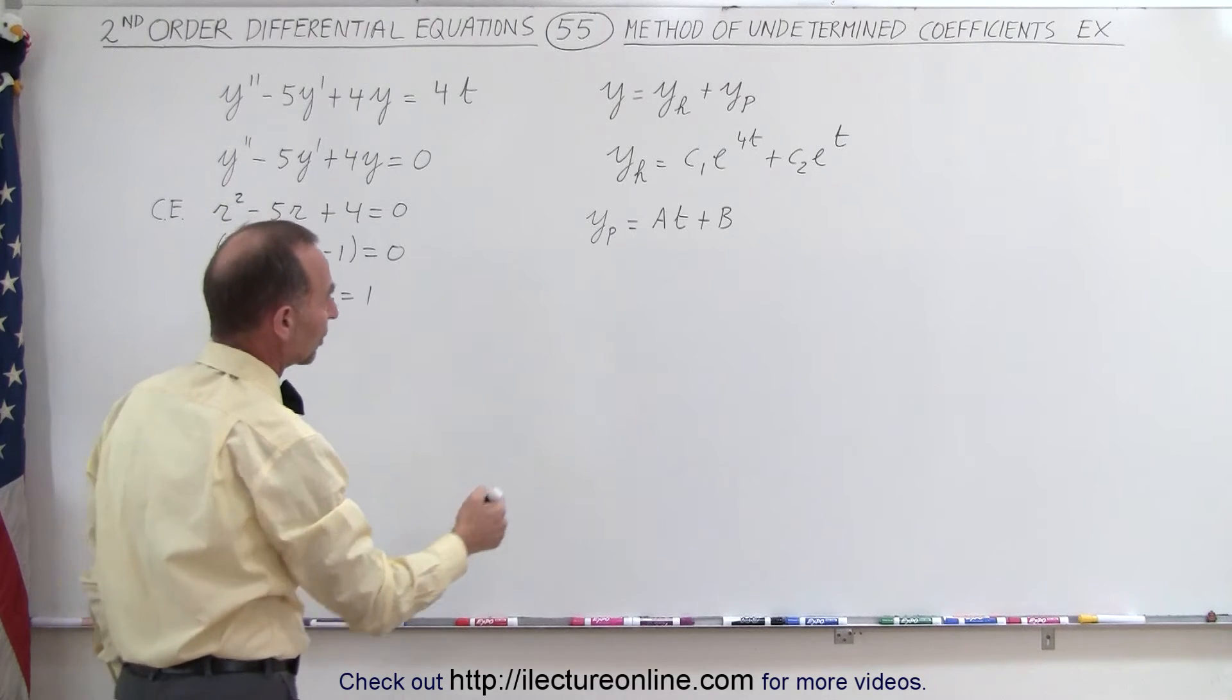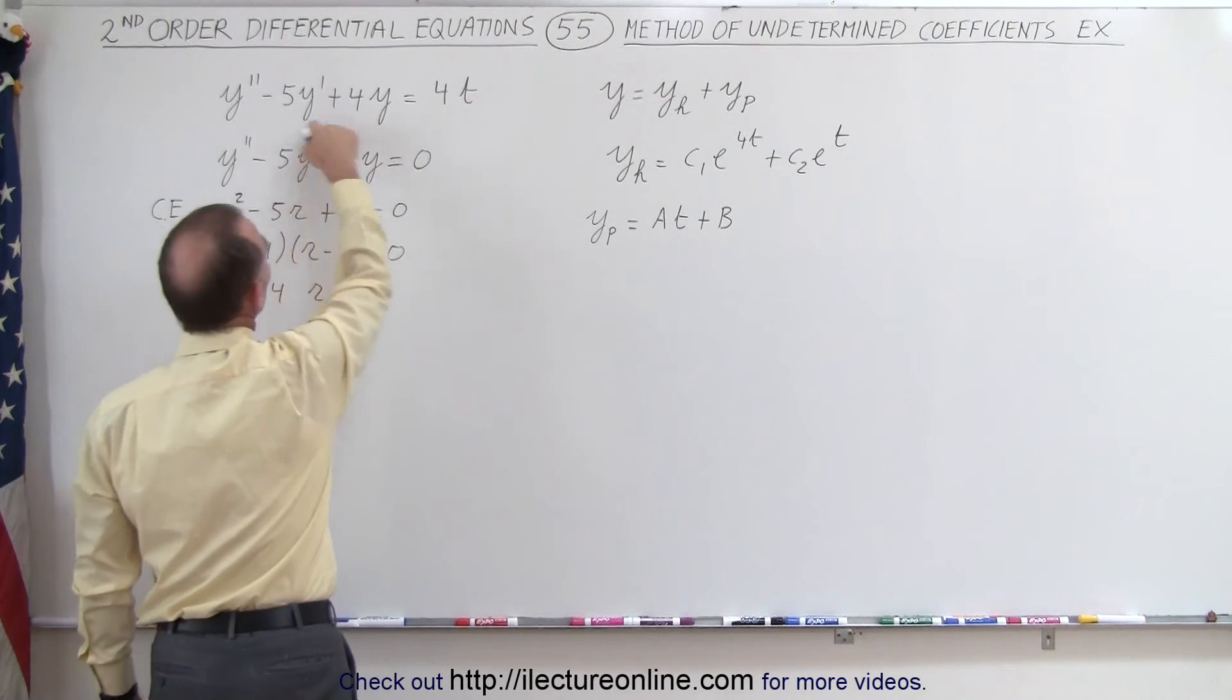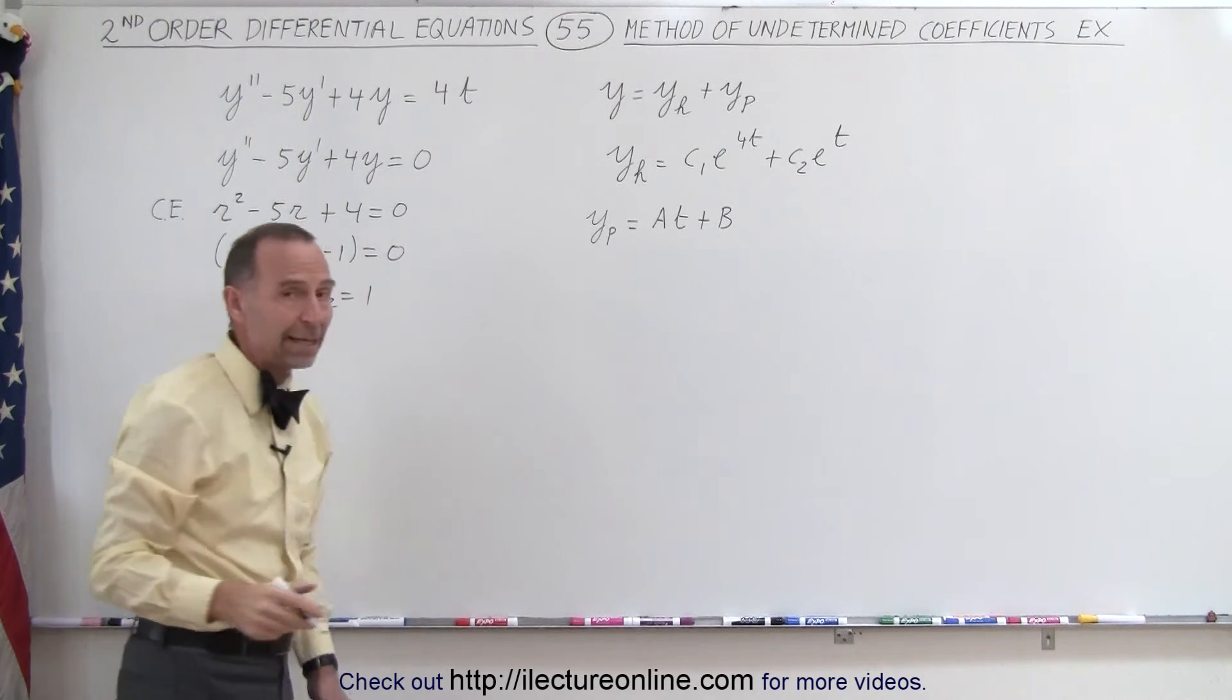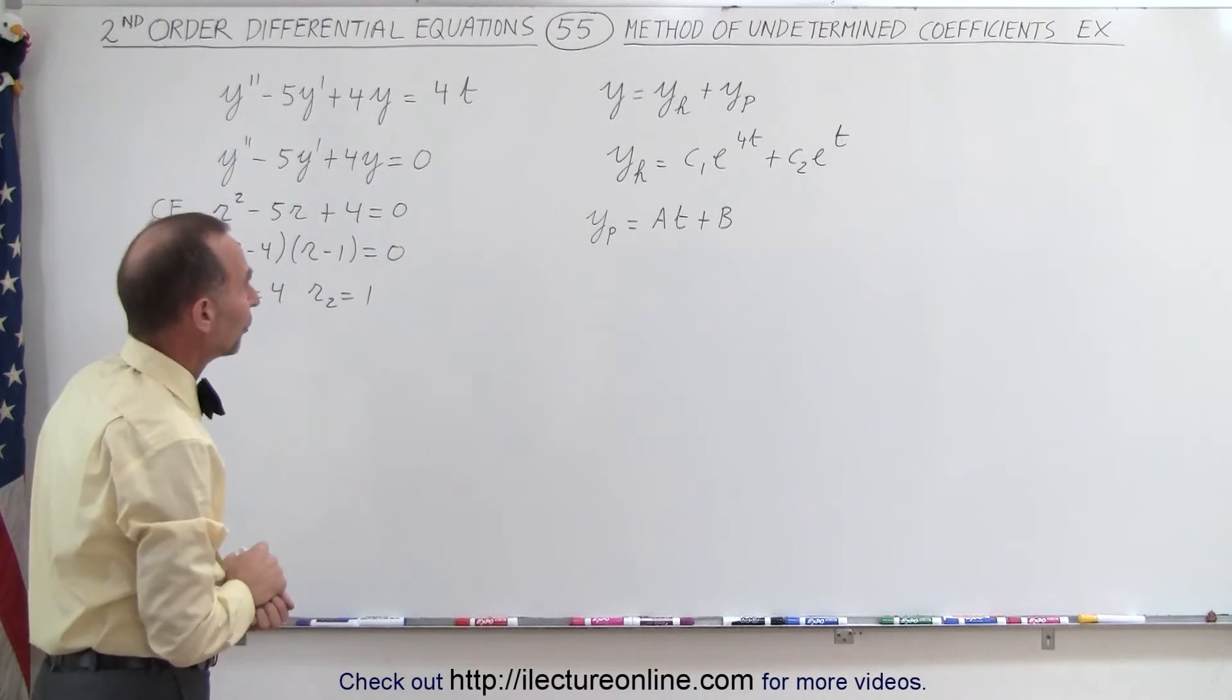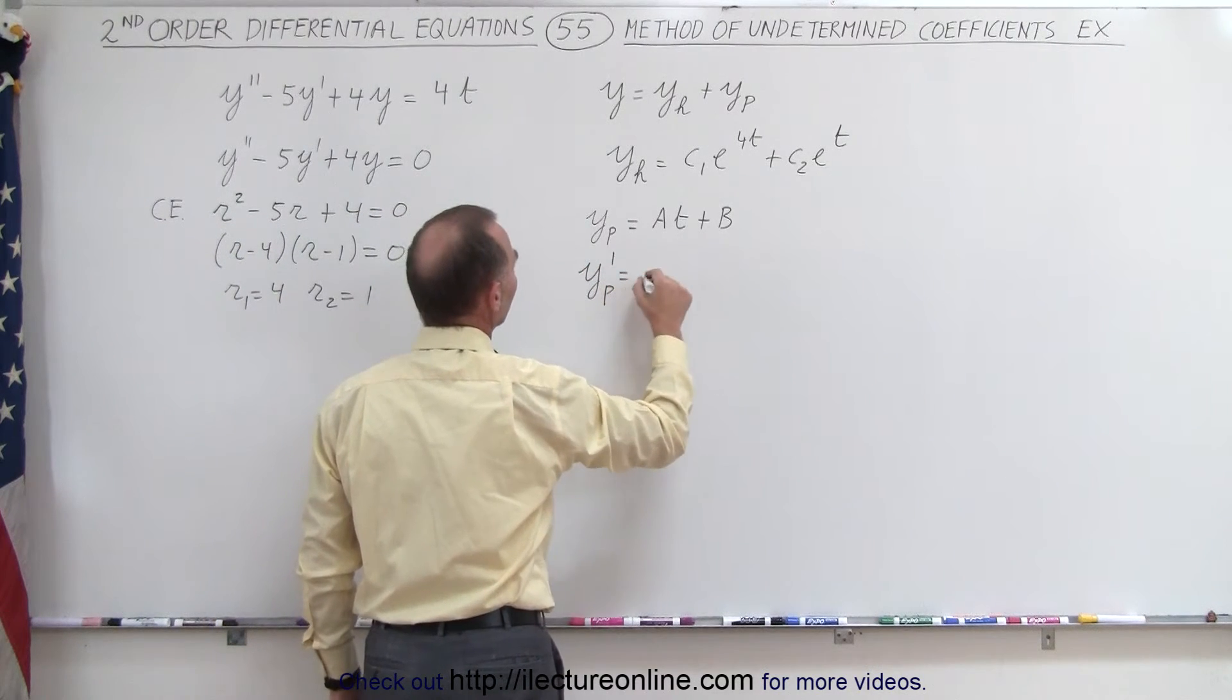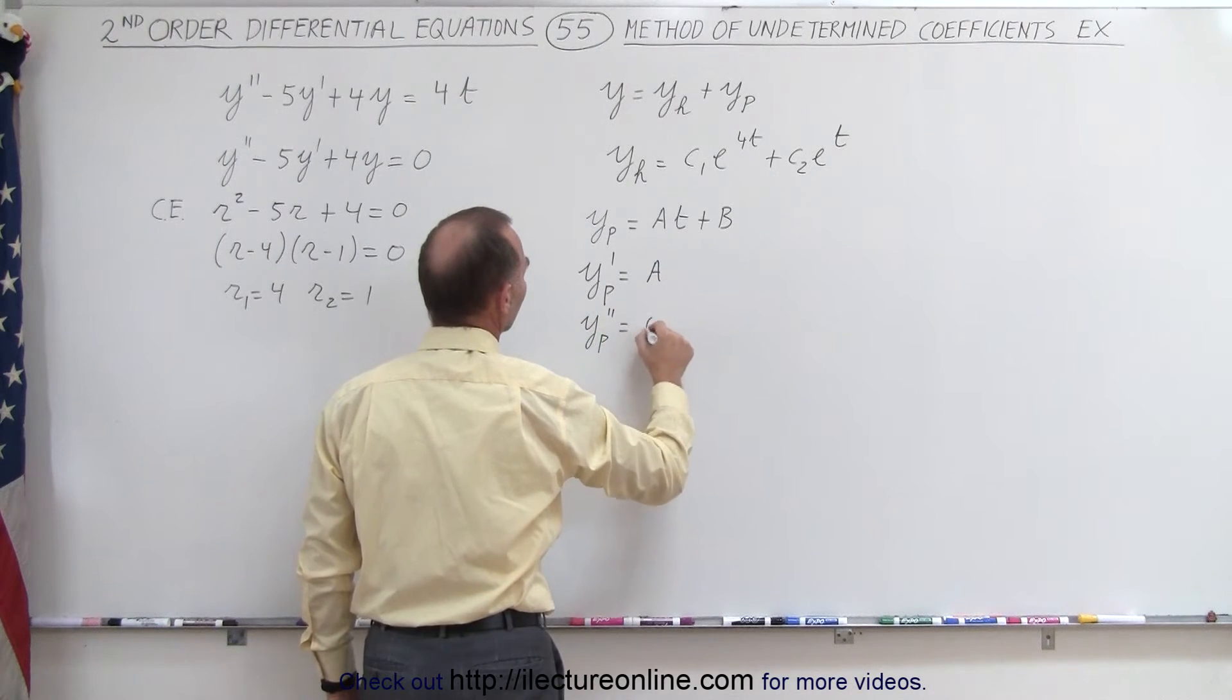And all we have to do now is find the values for A and B. So what we're going to do is take the first and second derivative of this, plug it back in the original equation, set it equal to 4t, and then solve for A and B. That's the method of undetermined coefficients.